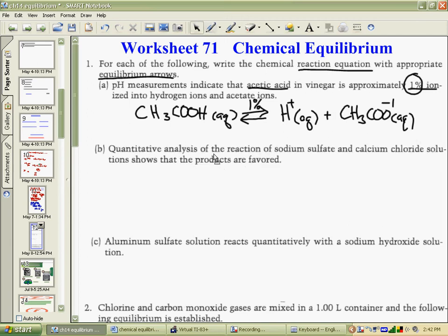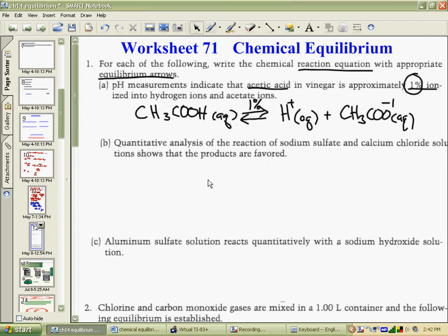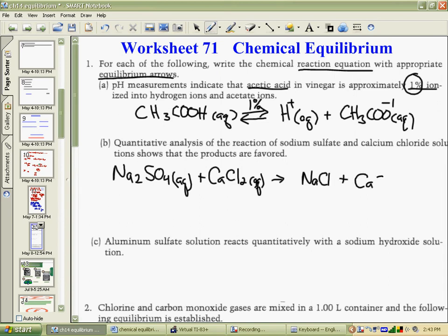Next, we're looking at part B. Quantitative analysis of the reaction shows that the reaction of sodium sulfate reacting with calcium chloride, CaCl2. And it is going to be a double displacement reaction, so we will produce sodium chloride and calcium sulfate. All of these would be in an aqueous environment. To balance that, we need a 2 in front, and they tell us that the products are going to be favored.